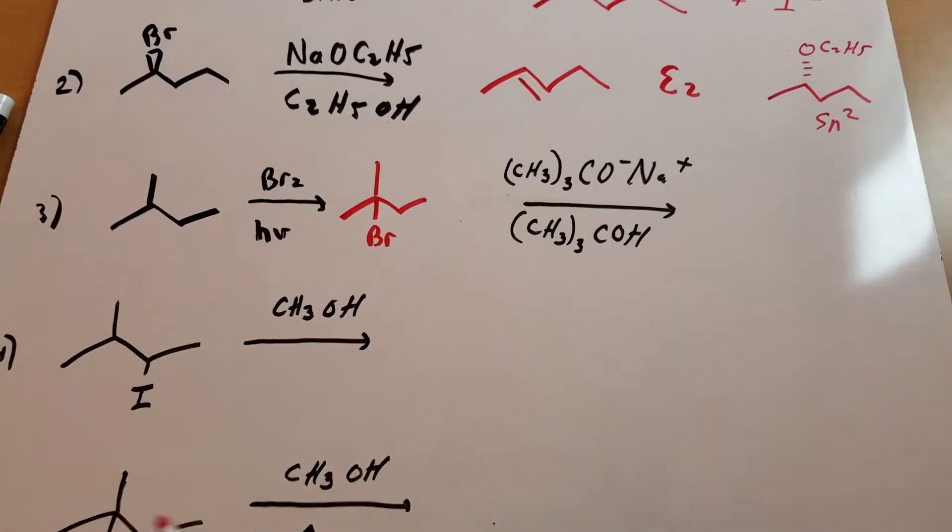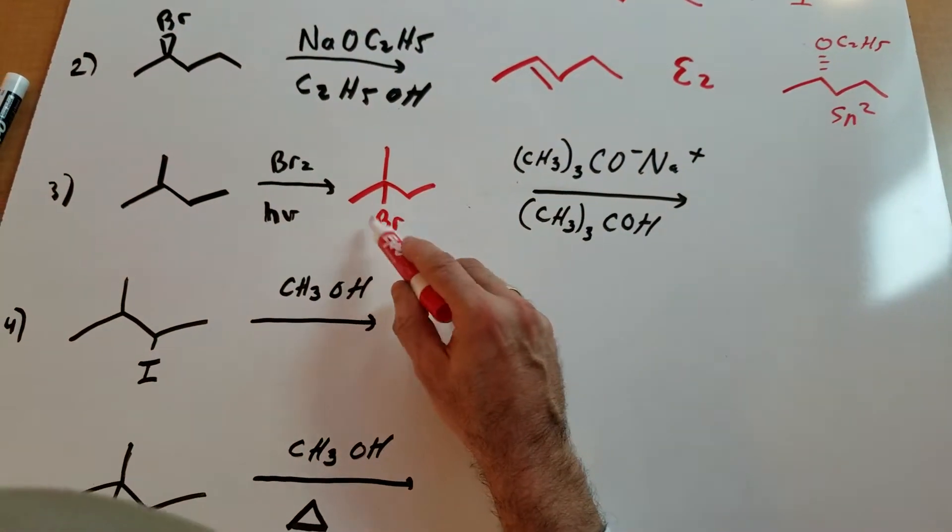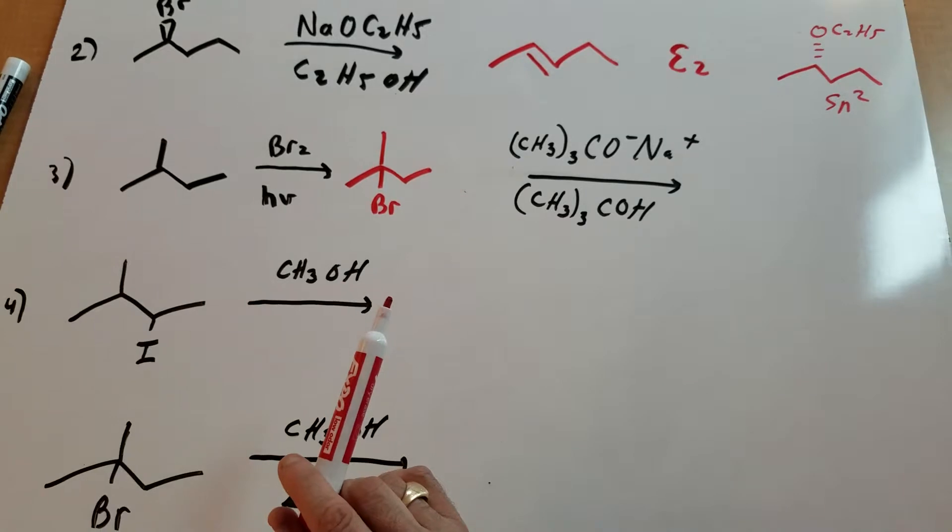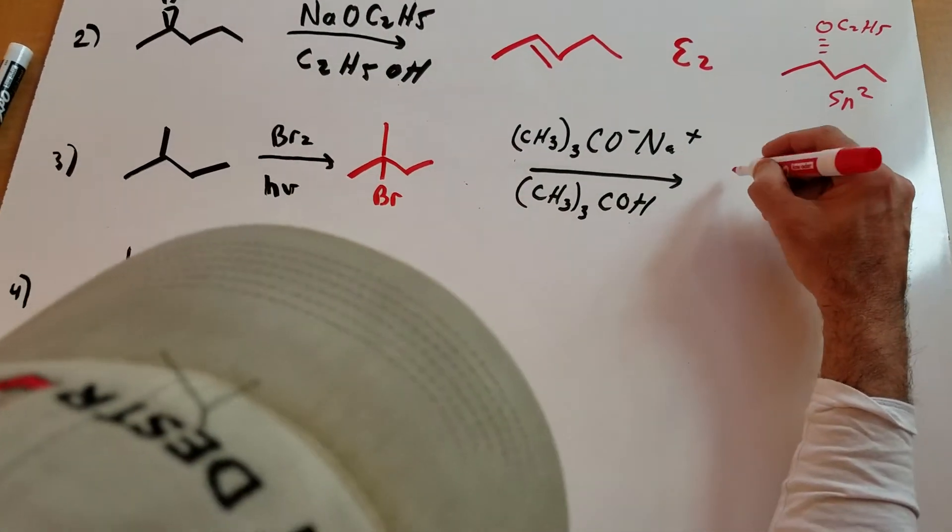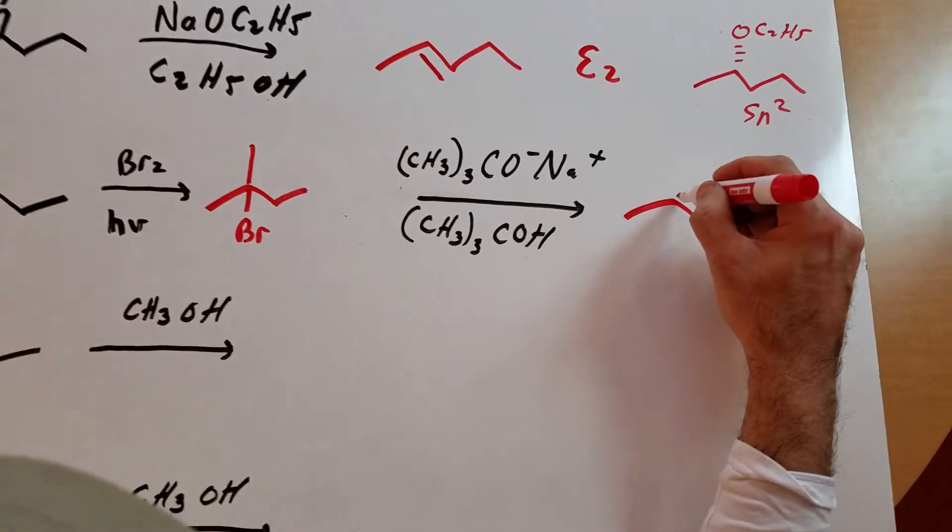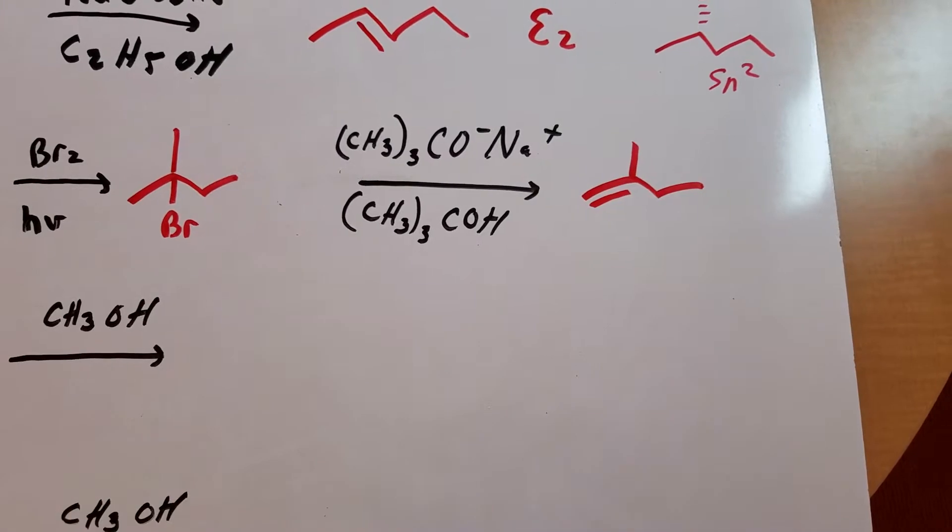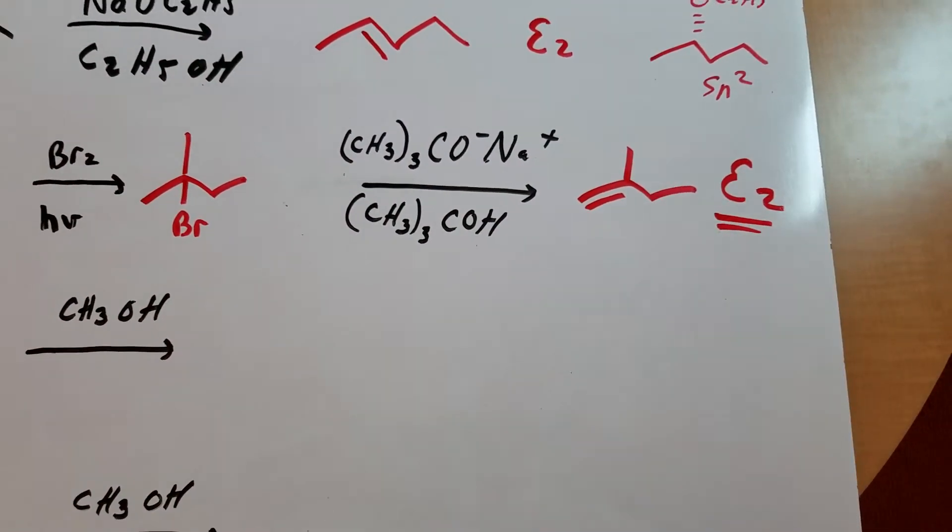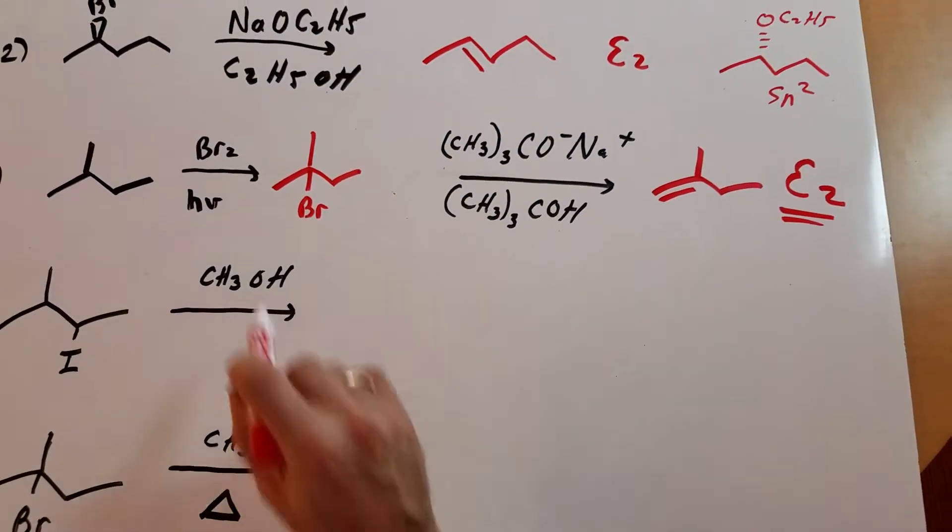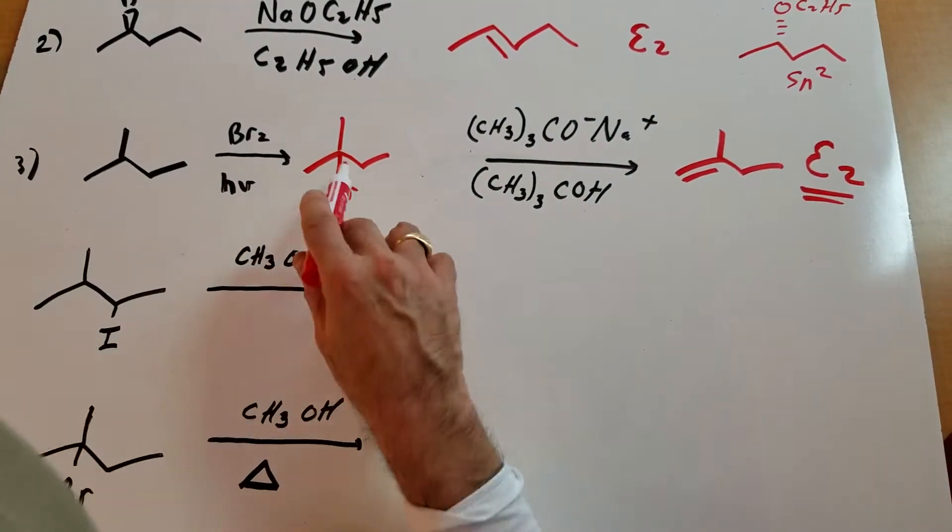Of course the bromine is going to leave, but the hydrogen that's going to leave is not the innermost but the one on the outside. And we call this—some people call it the anti-Zaitsev, but the correct terminology would be Hoffman. So this would be a Hoffman elimination and the mechanism here would be an E2. This mechanism here would just simply be a radical substitution reaction.